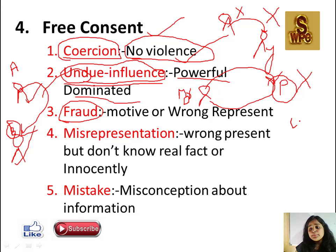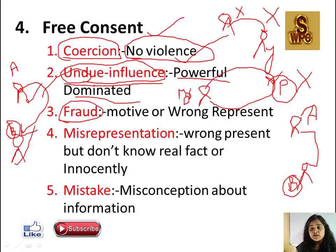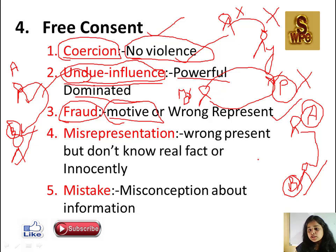Next hai Fraud. Mr. A ne apne aap ko wrong represent kiya Mr. B ke saamne jisse woh Mr. B se koi contract le sake. Mr. A ki intention Mr. B ko dhoka dene ki thi - unka motive tha unke saath fraud karna. Isliye Mr. A ne khud ko wrong represent kiya Mr. B ke saamne. Yeh bhi hamaari free consent nahi hai. Next hai Misrepresentation - wrong presentation but no real fraudulent fact, innocently. Mr. A ek laptop bechta tha aur customer ko kaha ki keyboard bilkul smoothly chalte hain - yeh unhone Mr. B ke kehne par kaha tha, par Mr. A khud innocent tha.